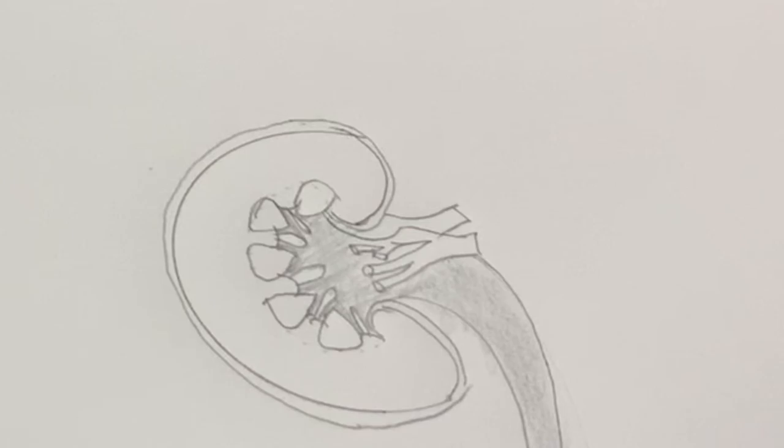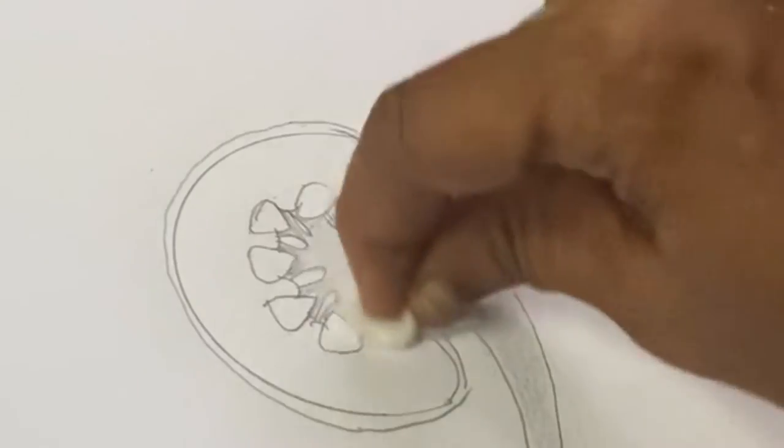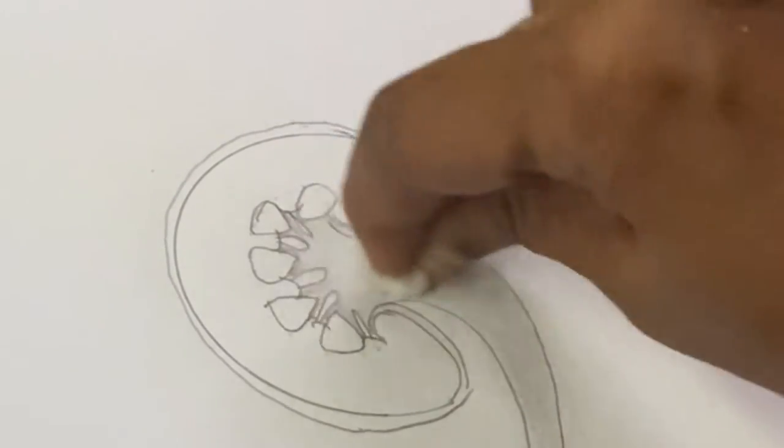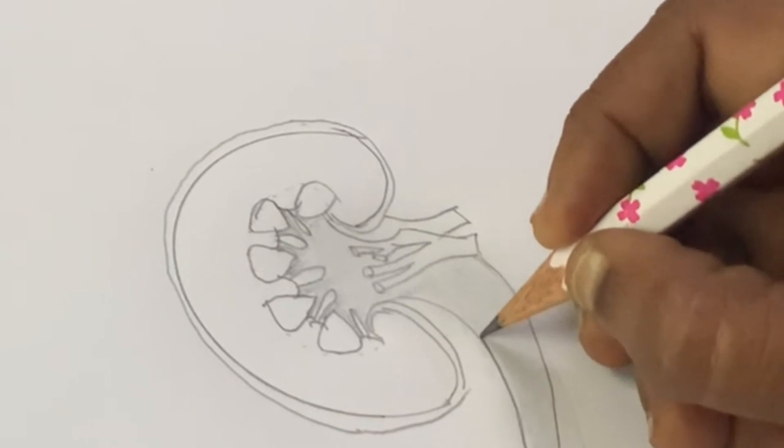After making paste, you take small cotton and just rub it over so it gives a 3D effect. Then draw one more time the outline.